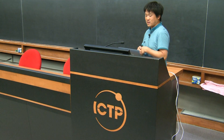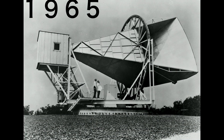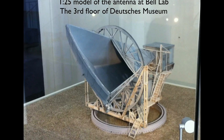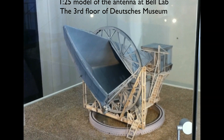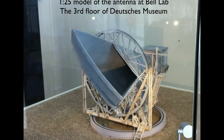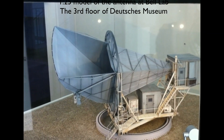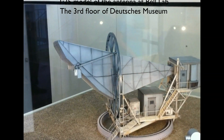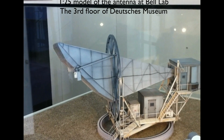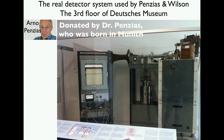If you really wanted to see it properly, you need something better. I'll show you a 1-in-25 scale model of the discovery antenna, exhibited on the third floor of the Deutsches Museum in Munich, one of the best science museums in the world. This is the real detector system from the discovery, donated by Arnold Penzias, who was born in Munich. His family had to flee to the U.S. due to Nazism, but he nonetheless kindly donated it. When I saw this in the Deutsches Museum, I almost cried.